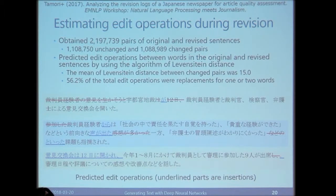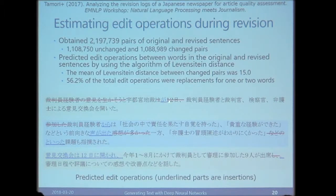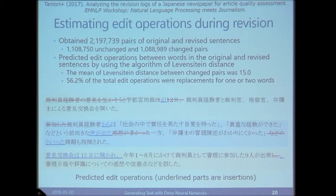We predict edit operations between original and revised sentences using the Levenshtein distance algorithm. For example, a part is removed in the final version, a character 'ga' is inserted, and so on. We can reconstruct these operations from the data. The mean Levenshtein distance between changed pairs was 15, meaning editors make quite significant edits. About half of all edit operations were replacements of one word with two words.